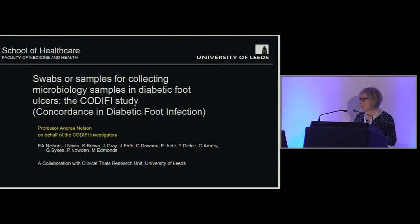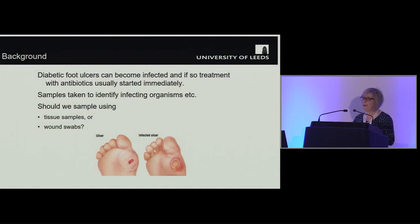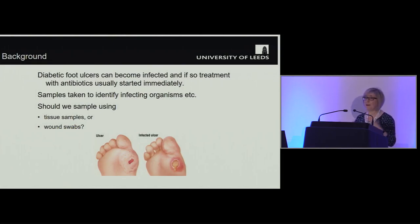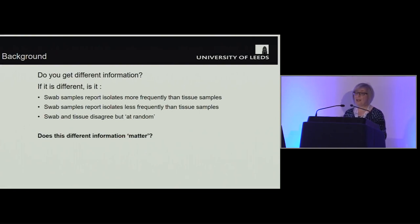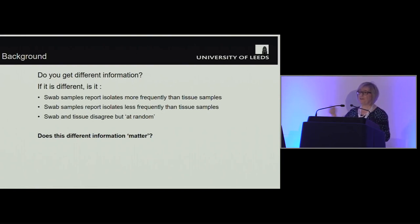Thank you, Una. So we conducted a cross-sectional study asking the question: do you need to use swabs or samples — tissue samples, cutting bits out of patients — in order to identify the flora contributing to infection in the diabetic foot ulcer? Clearly, diabetic foot ulcers need rapid treatment so that the clinical sequelae of infection are minimised, and this can become a medical emergency. So it's a really important question: should we sample with tissue or with swabs? In order to make that decision, you need to understand, do I get the same information from taking a tissue sample as I would if I took a local swab?